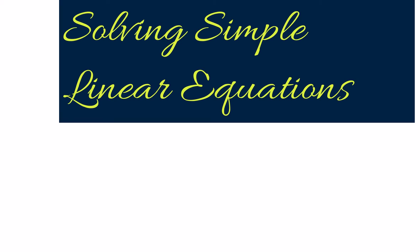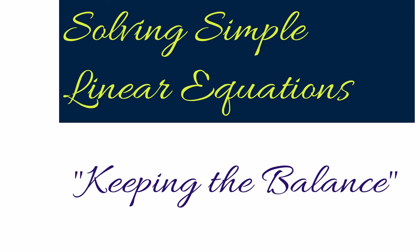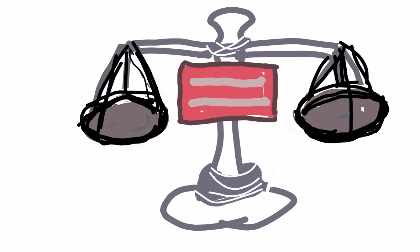In this video we're going to talk about solving simple linear equations and keeping the balance. If a is equal to b in the beginning of an equation, we want to keep that balance the whole time. An equal sign is similar to a scale that shows balanced weights. When we do operations to solve an equation, we have to do them in a way that keeps the equal sign balanced.